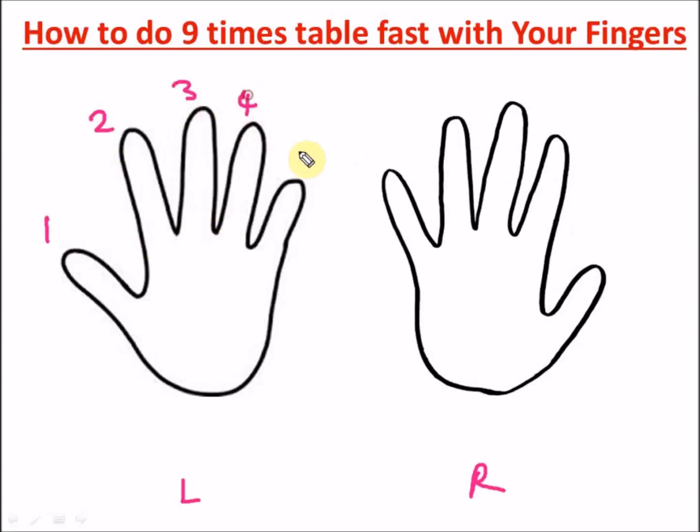Looking at it, you're going to count one, two, three, four, five, six, seven, eight, nine, and ten. Let's take an example. Let's say we want to do four times nine.